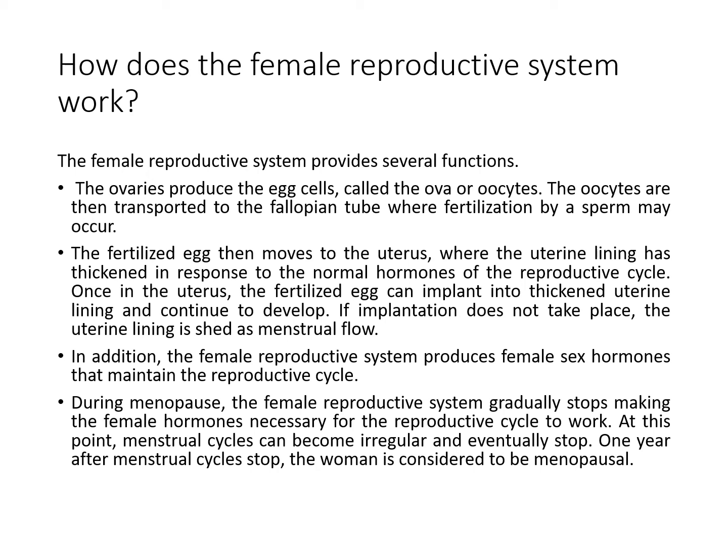How does the female reproductive system work? The ovaries produce egg cells. The system functions to produce eggs, facilitate fertilization, and produce female sex hormones to maintain the reproductive cycle. During menopause, the female reproductive system gradually stops making the female hormones necessary for the reproductive cycle to work. The menstrual cycle becomes irregular and eventually stops. One year after the menstrual cycle stops, the woman is considered menopausal, a stage at which no female sex hormones are produced.